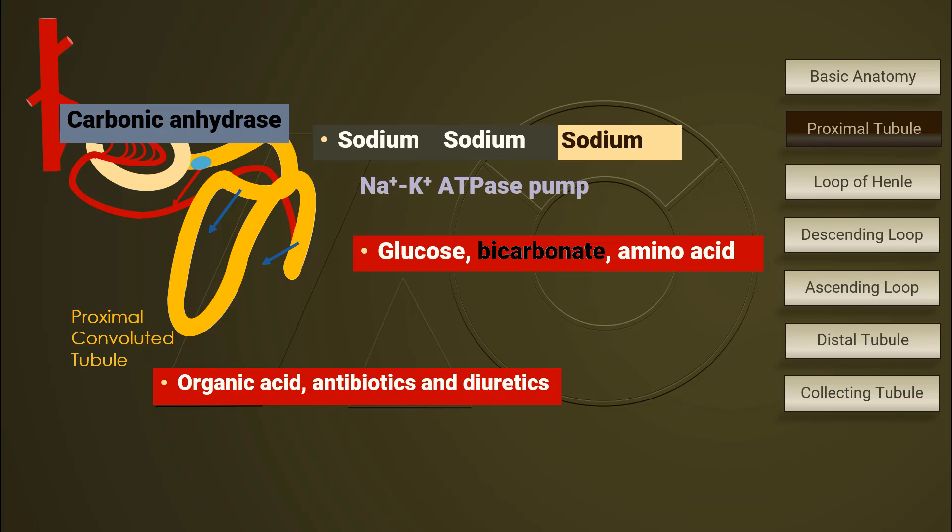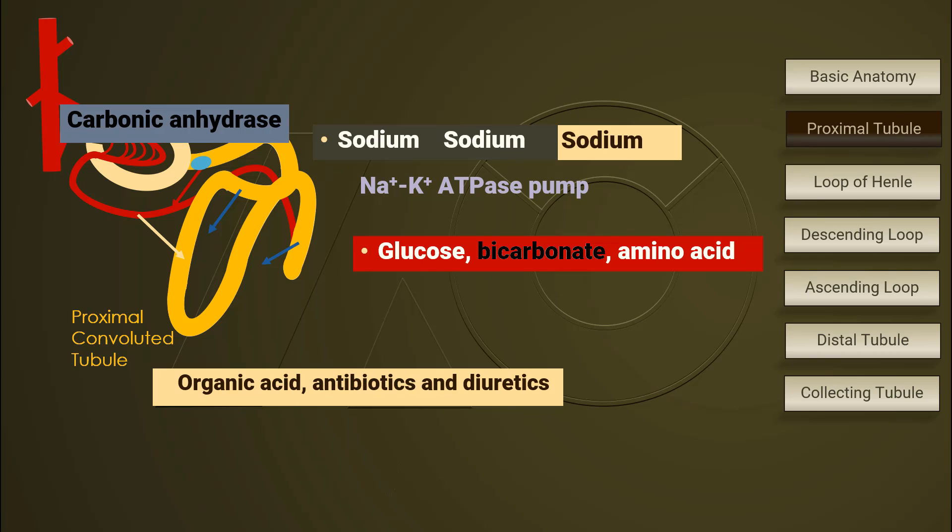Organic acid, such as uric acid, some antibiotics, and majority of diuretics are secreted from the blood into the lumen at the mid-third proximal tubule. Diuretics secreted into the lumen here compete with uric acid for transportation.